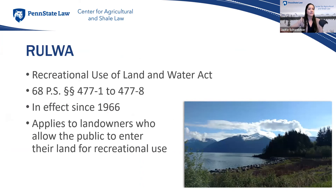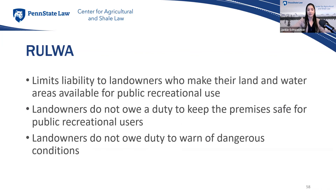If you're unable to meet the requirements for liability protection under those other statutes, you still have hope with the Recreational Use of Land and Water Act, known as RUWA. RUWA applies to landowners who allow the public onto their land for recreational use — which applies to agritourism farmers. It limits liability by lowering the duty of care owed by a landowner, bringing it down to the level owed to a trespasser, so the landowner does not need to inspect their property or warn.